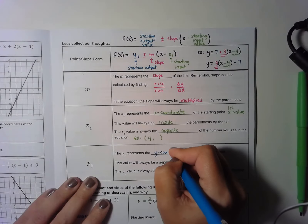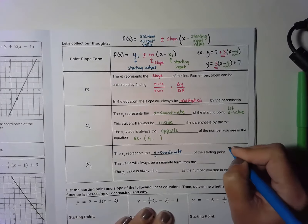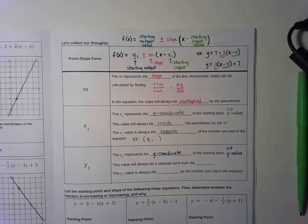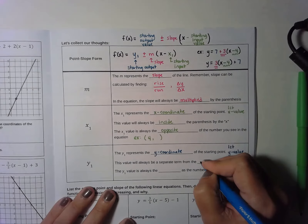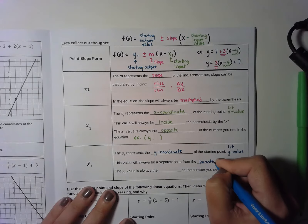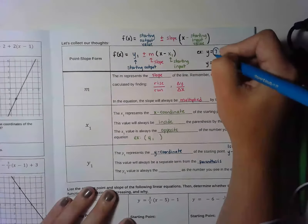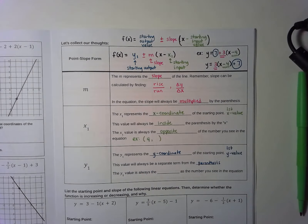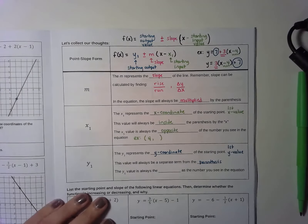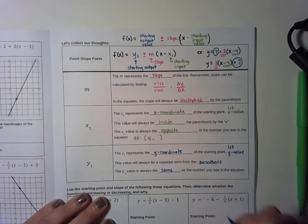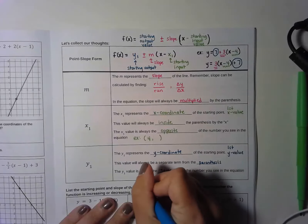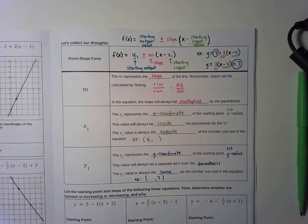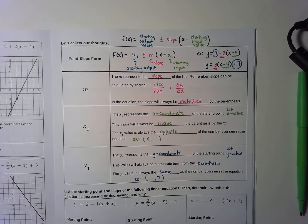The last piece of the equation is y1, which represents the y coordinate of the starting point. This stands for the first y value — it's just shorter to write y1 than 'first y value.' This value will always be a separate term from the parentheses. You'll notice in both forms of the equation the y value is added or subtracted — it is separate from the parentheses, not inside and not multiplied by it. The y1 value is always the same number you see in the equation, so a positive 7 means your starting y is positive 7.